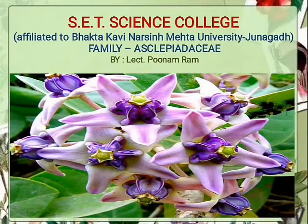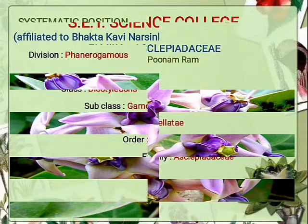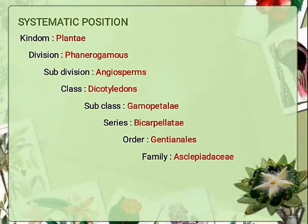Hello students. In the previous lecture we already discussed the daisy family. In this lecture we are going to study about family Asclepiadaceae. First of all, we talk about the systematic position of this particular family according to Bentham and Hooker's classification system. Kingdom: Plantae — cell wall is made up of cellulose, no locomotion, and mode of nutrition is autotrophic.